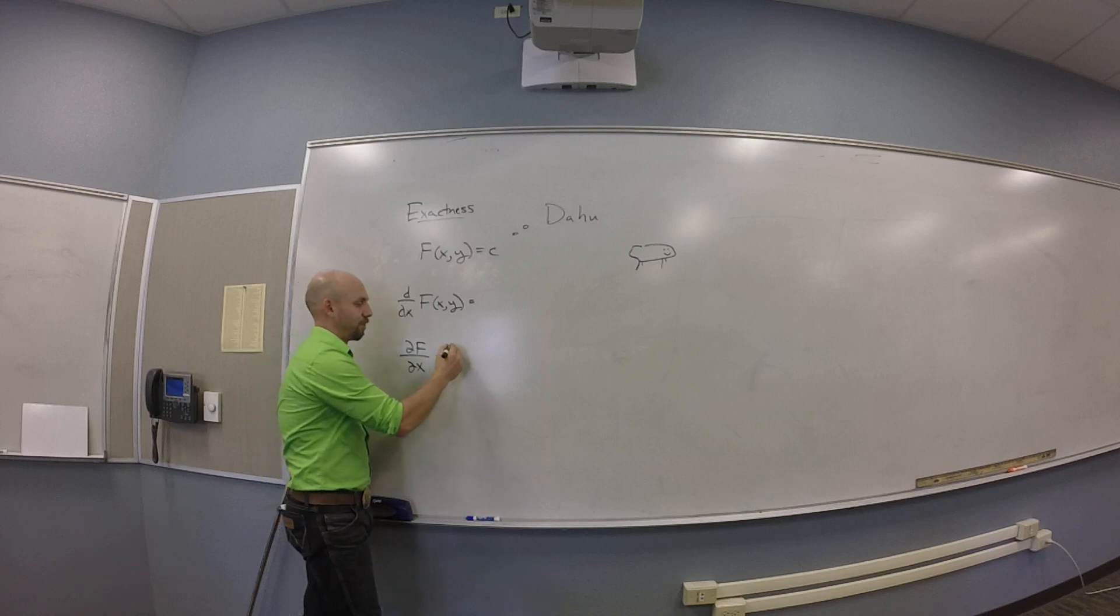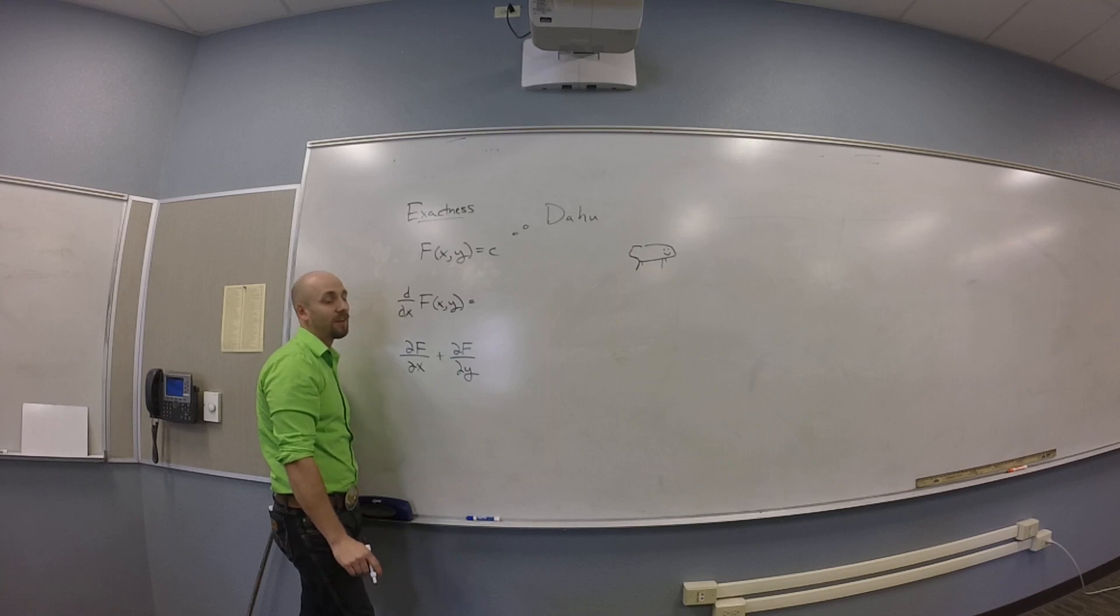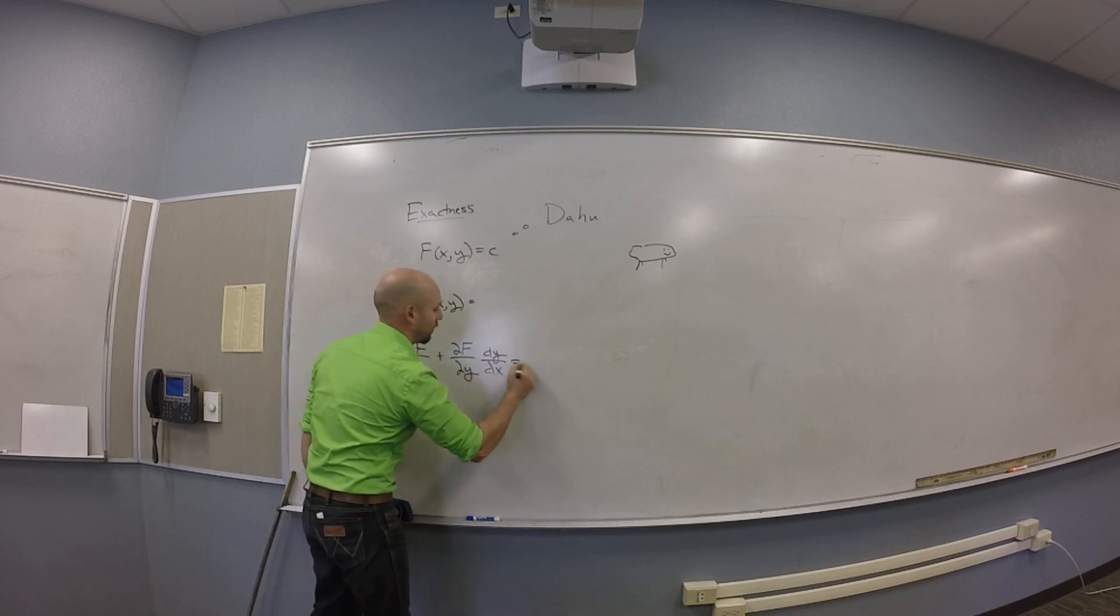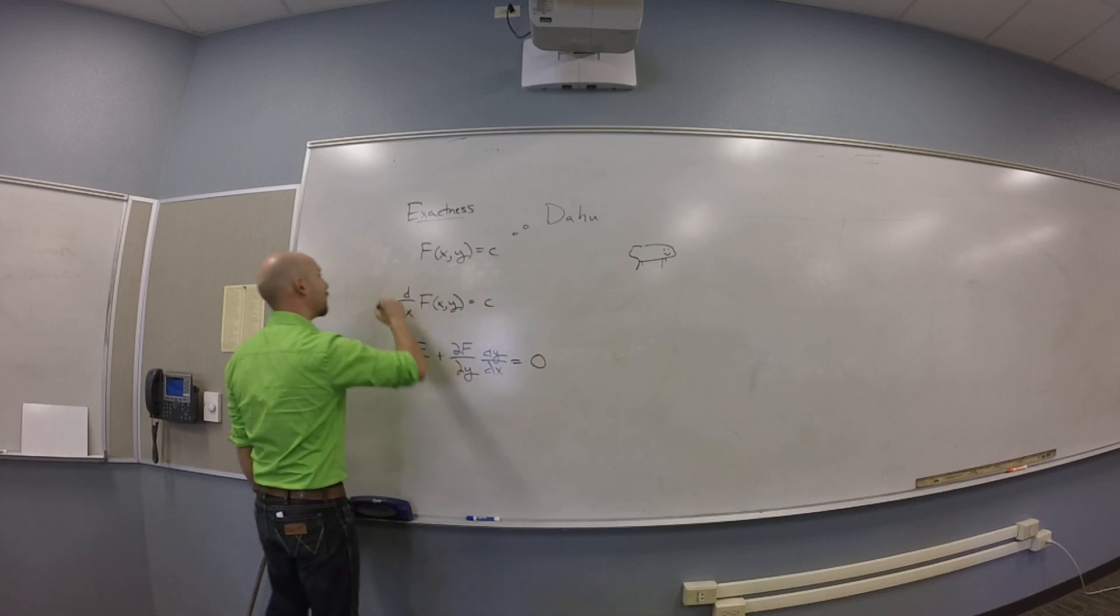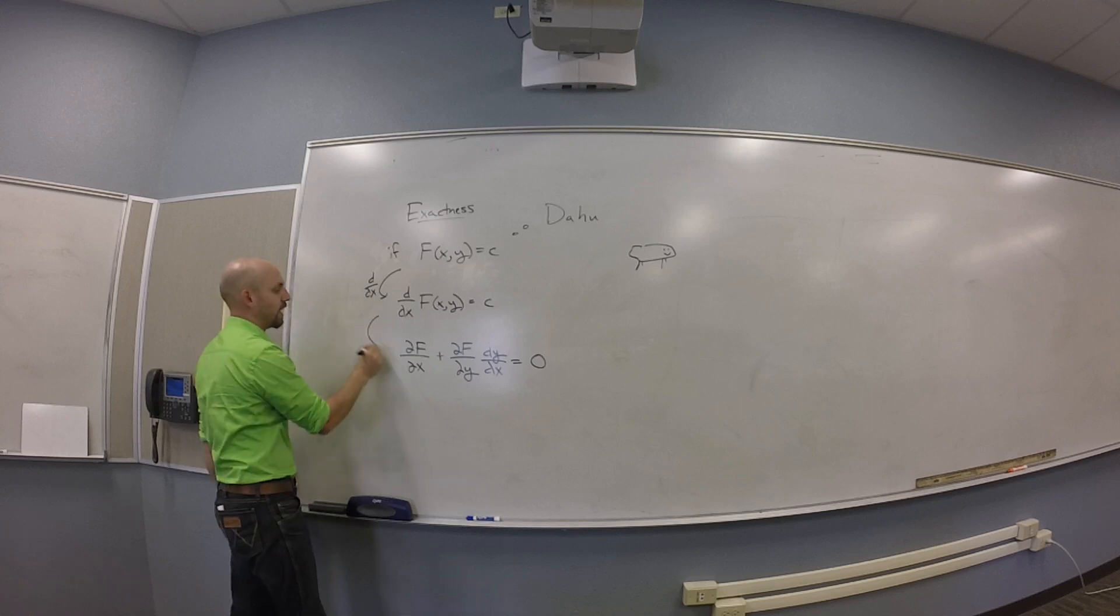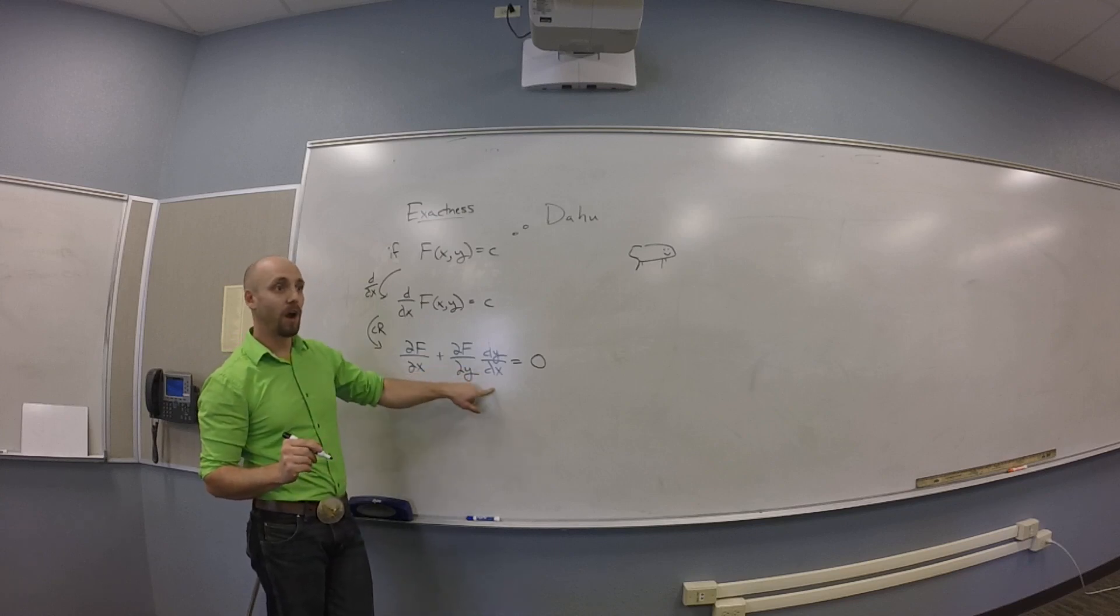So you get a partial of f with respect to y, and then what's the chain rule kick there? Partial of y with respect to x. Close. Not a partial of y with respect to x, because y only depends on x, right? So you get a dy/dx here. So what I'm really saying is, if I'm sitting on a level curve, and I differentiate with respect to x both sides, then the chain rule gives me that the partial of f with respect to x plus the partial of f with respect to y times dy/dx has to be zero.